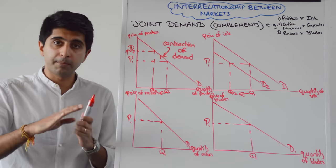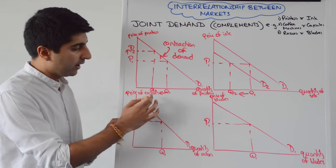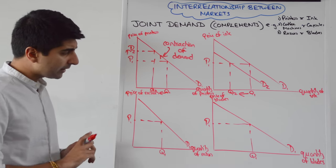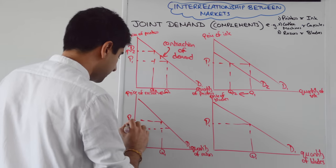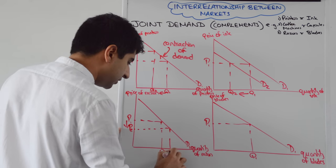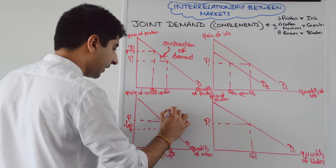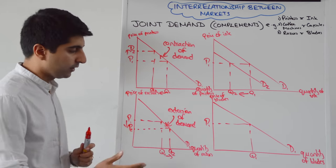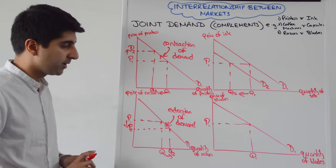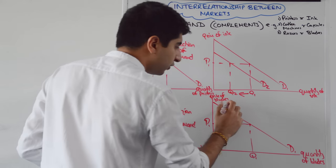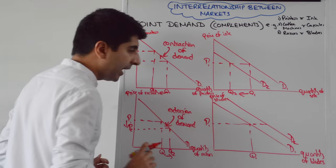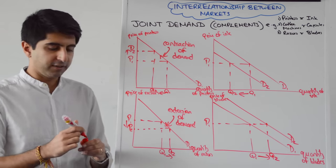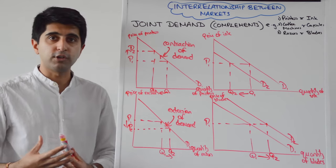Vice versa if the price of a complement goes down. Let's look at the market for razors and then the demand for razor blades on the right-hand side. If the price of razors has decreased from P1 to P2, that will lead to an extension of demand for razors. But that will shift the demand for razor blades to the right, as more people will now purchase razor blades as they purchase razors. So at the same price there is now a shift of demand to the right and an increase in demand for razor blades. This is the interrelationship between markets when there are complementary goods — goods that are in joint demand.